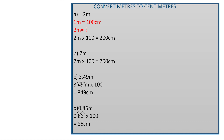Similarly, 7 metres will be 7 multiplied by 100, which is equal to 700 centimetres. The next one: 3.49 metres. Same way, it's multiplied by 100. But here, you have to be careful of the decimal point. The decimal point will move two places towards the right. Therefore, your answer will be 349 centimetres.